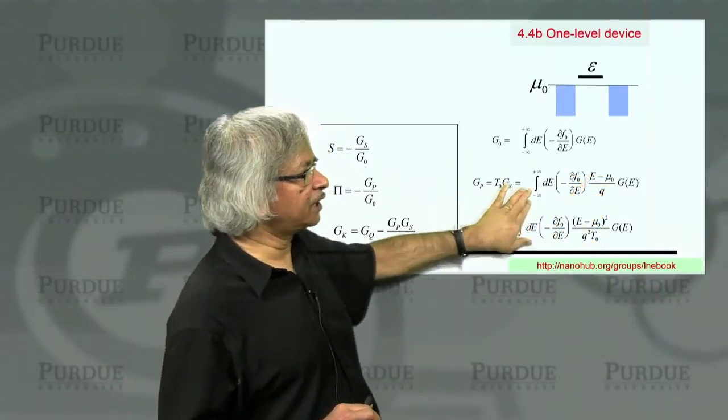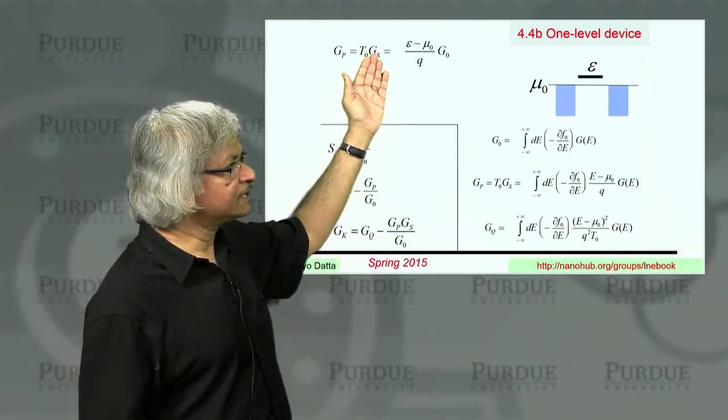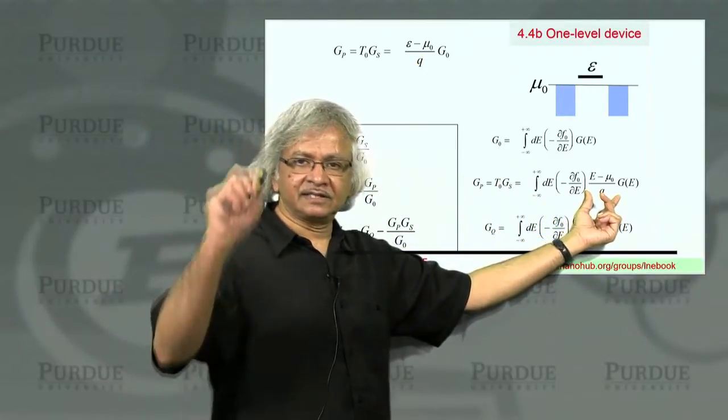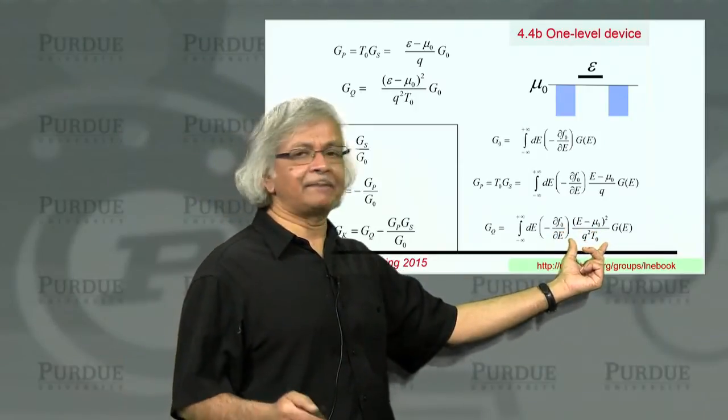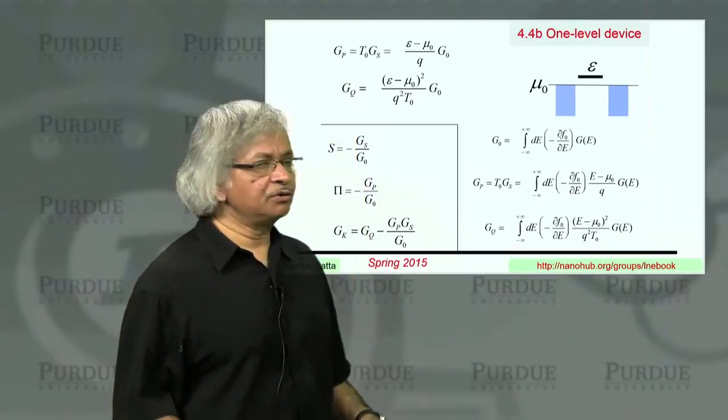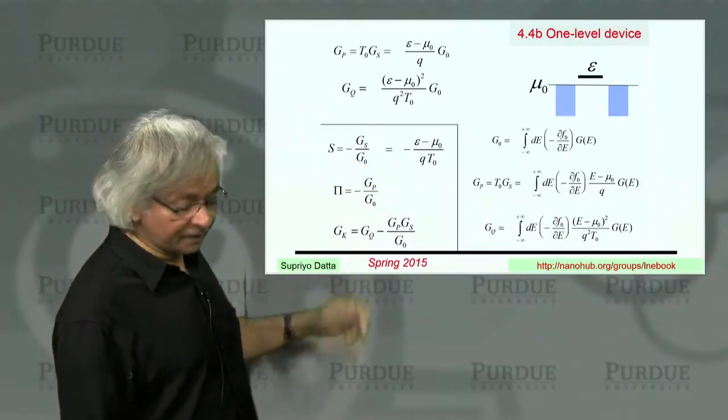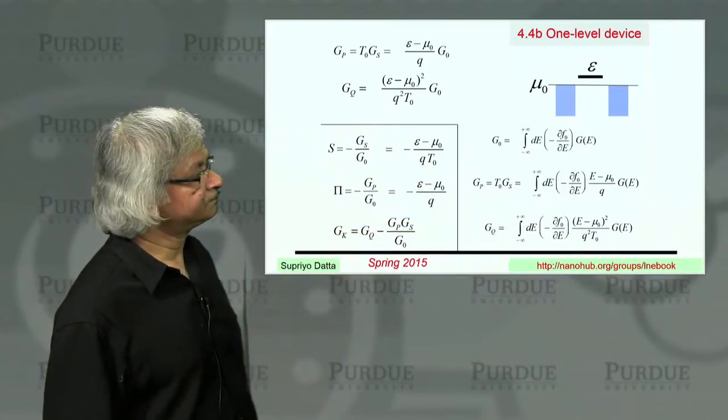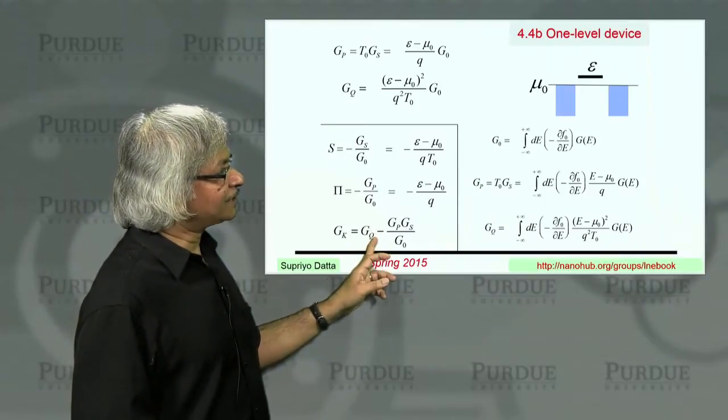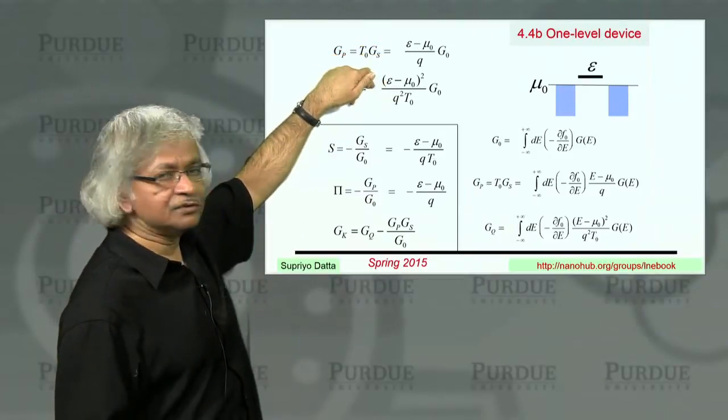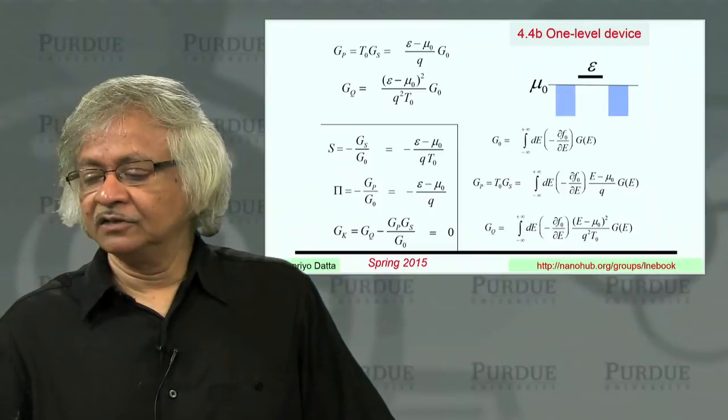I could pull it out of the integral so that what remains is G0. So I could write Gp, which is equal to T0 times Gs, as G0 times whatever this function happens to be exactly at E equals epsilon. Same with the next one. When you write Gq, it's G0 times whatever this happens to be at E equal to epsilon. So once you have those, you can find the Seebeck coefficient, it's the ratio of Gs to G0. Similarly, you can get the Peltier coefficient. And if you look at the Gk, this heat conductance, that's the interesting one. You get Gq minus this, and if you put in all these values, you'll see you get zero. The heat conductance of a one-level device is zero.